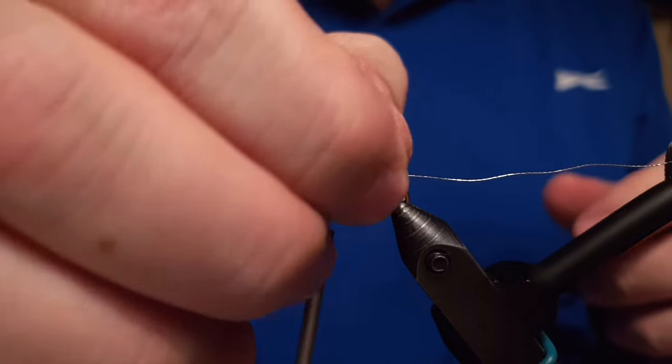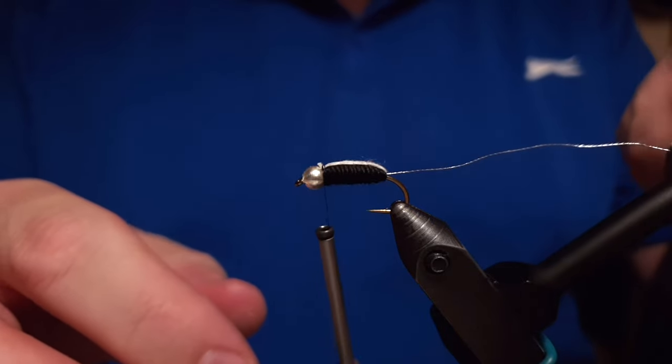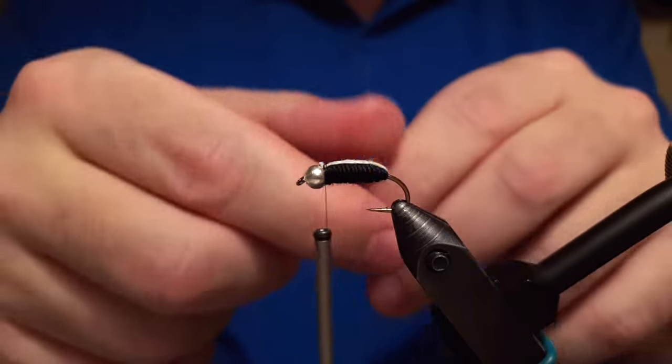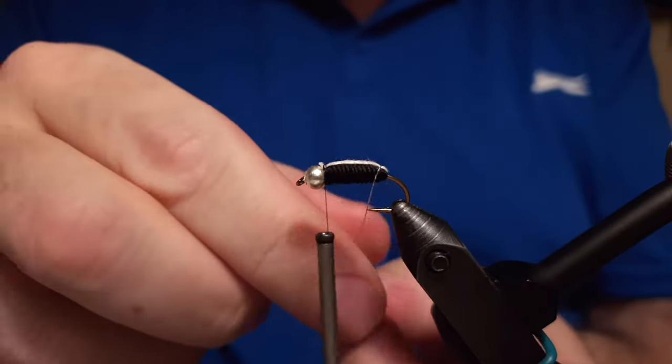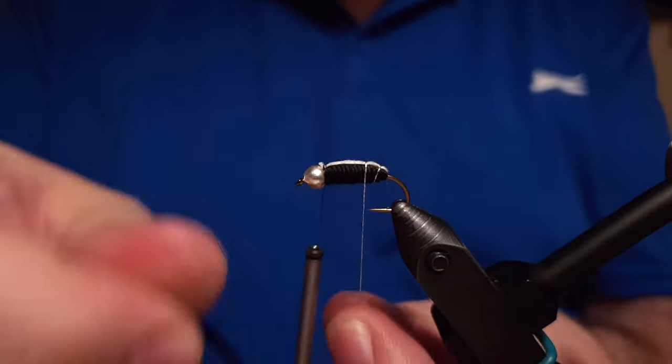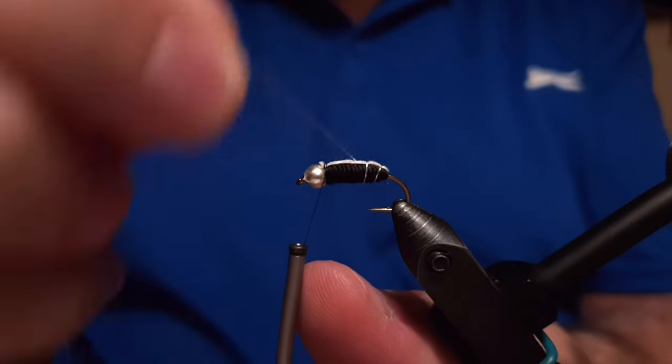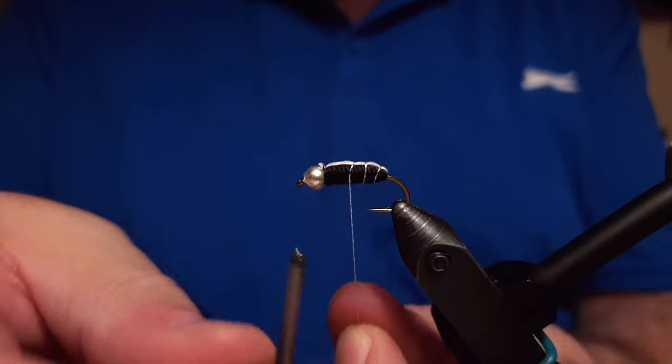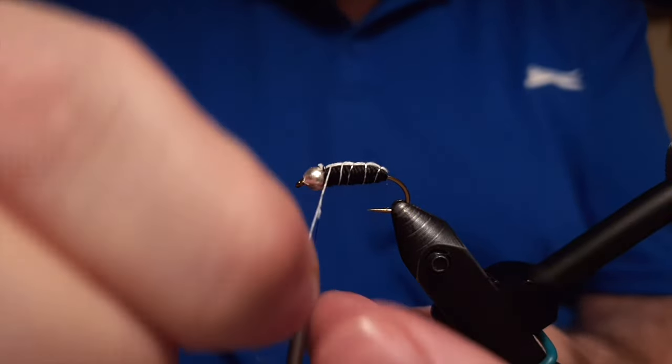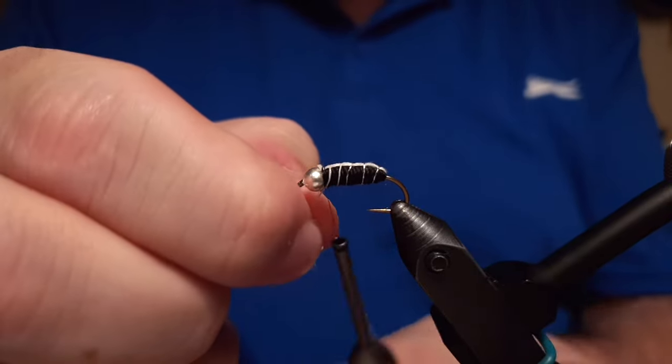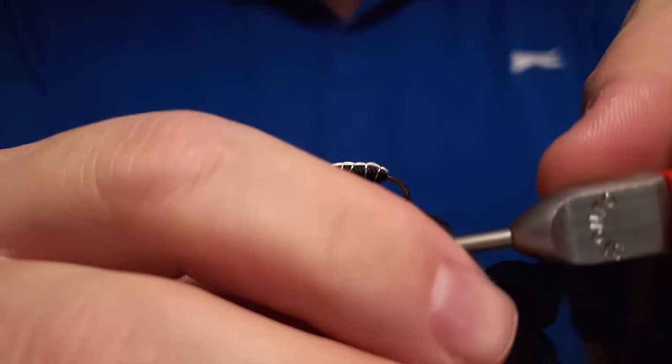Next step is the wire. The wire is crucial for the fly because it holds everything in place. It must be wrapped on as tight as you can. No troubles when you have it there. Snip that end off.